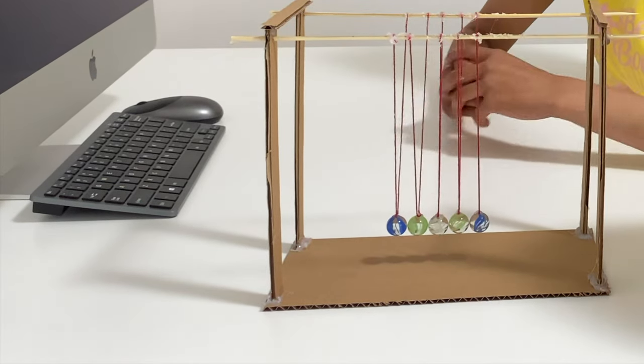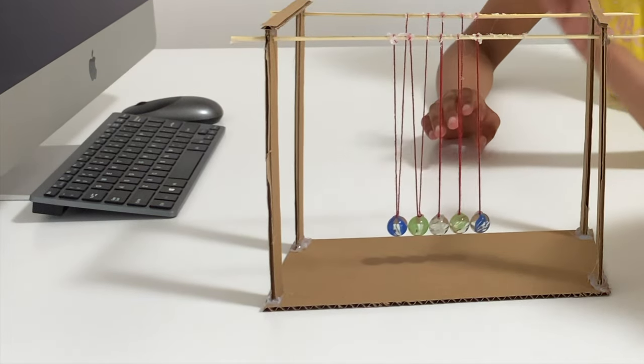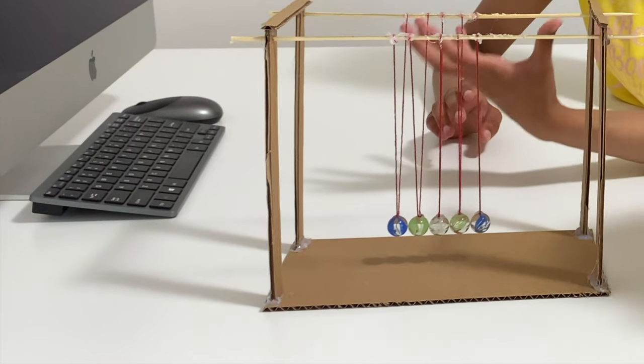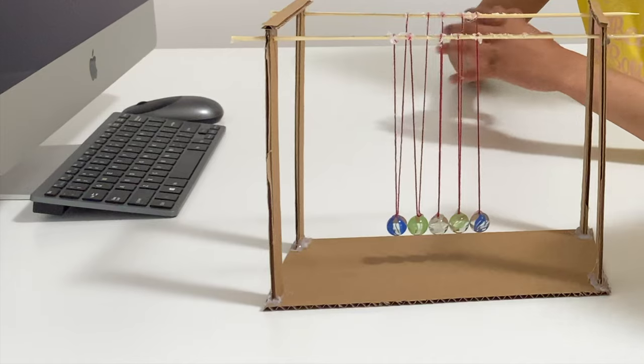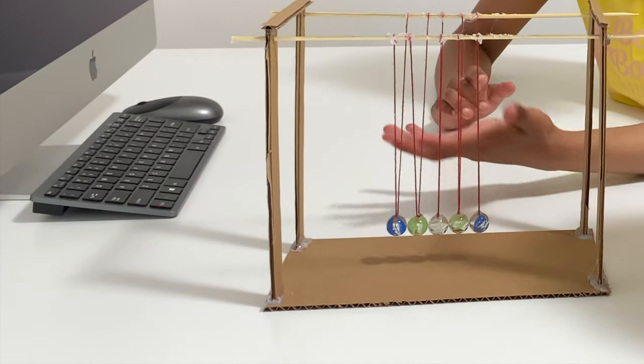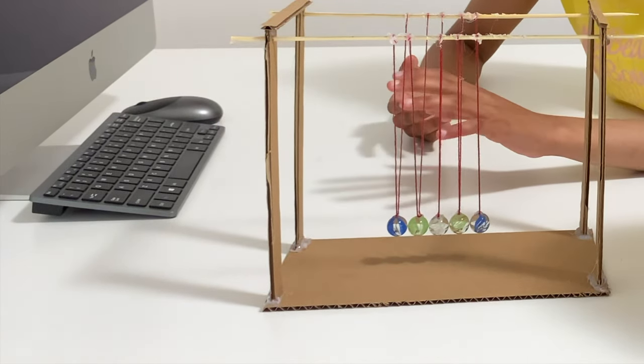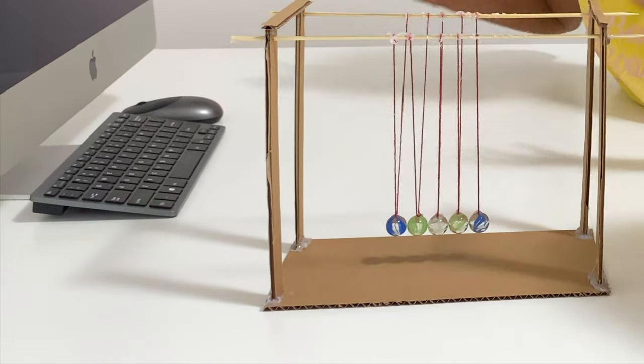Now, this Newton's Cradle has friction and air resistance present in it. And both of these laws are ideally supposed to work in a complete vacuum with no resistance at all. Therefore, these laws only work 100% when there's no friction. So if there was no friction, no air resistance, that means this Newton's Cradle could go on forever.